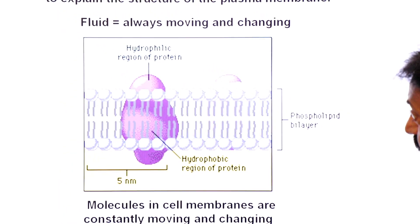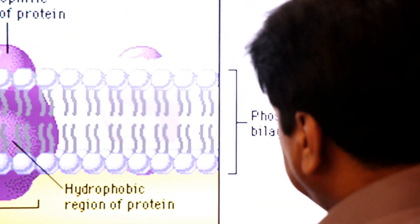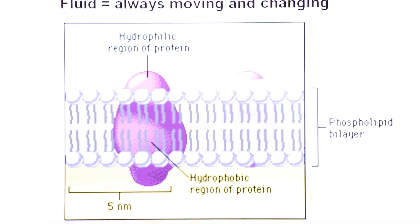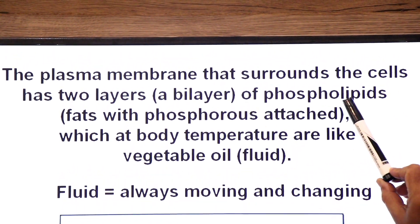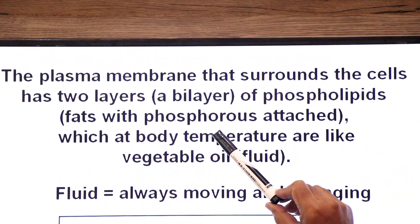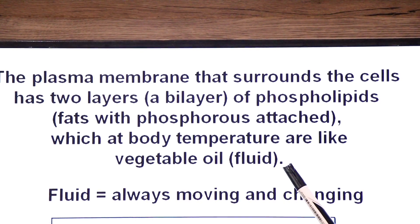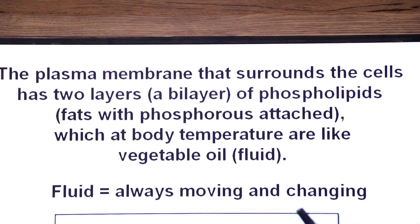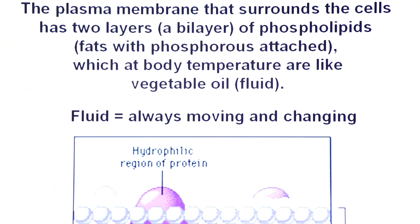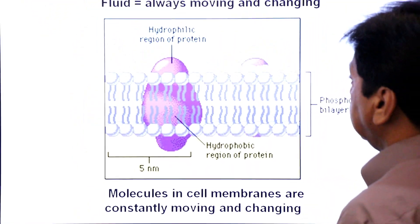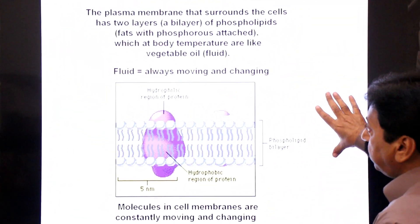So, to summarize: why is it called 'fluid'? Because of the bilayer of phospholipids — at body temperature the phospholipid bilayer behaves like vegetable oil, meaning it is fluid. That is why the lipid bilayer is referred to as the fluid part.